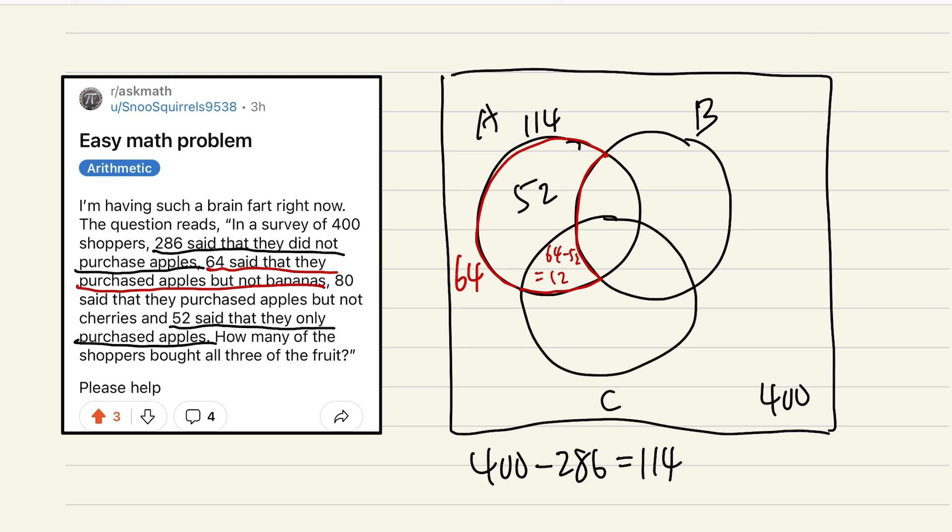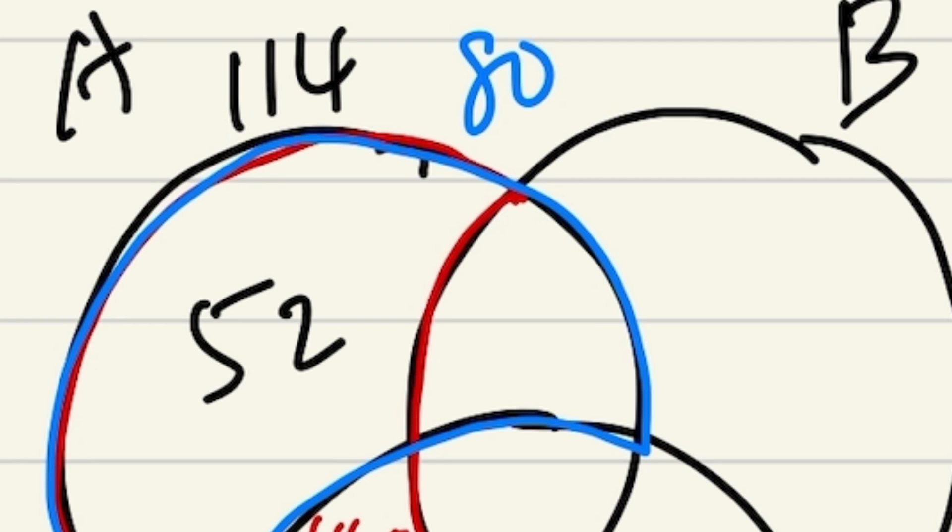Okay. And then we can continue with the next line. It says 80 said that they purchased apples but not cherries. So we have to avoid cherries and then include the apples like this. And the blue part, we have a total of 80. So you see here we have 52, so to figure out this part just go ahead and do 80 minus 52, which should be 28.